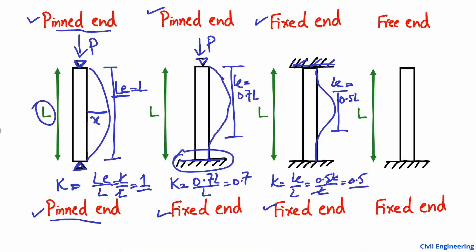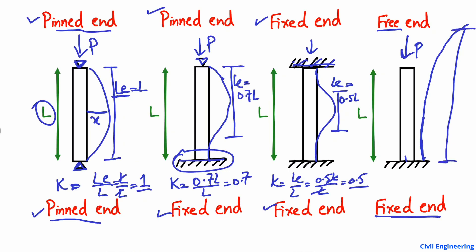The last case is the fixed-free column — one end is fixed and the other end is free with no support provided. When load P is applied, the column will buckle outward from the fixed base, and the effective length in this case equals 2 times L. So K equals 2L divided by L, which gives K equal to 2.